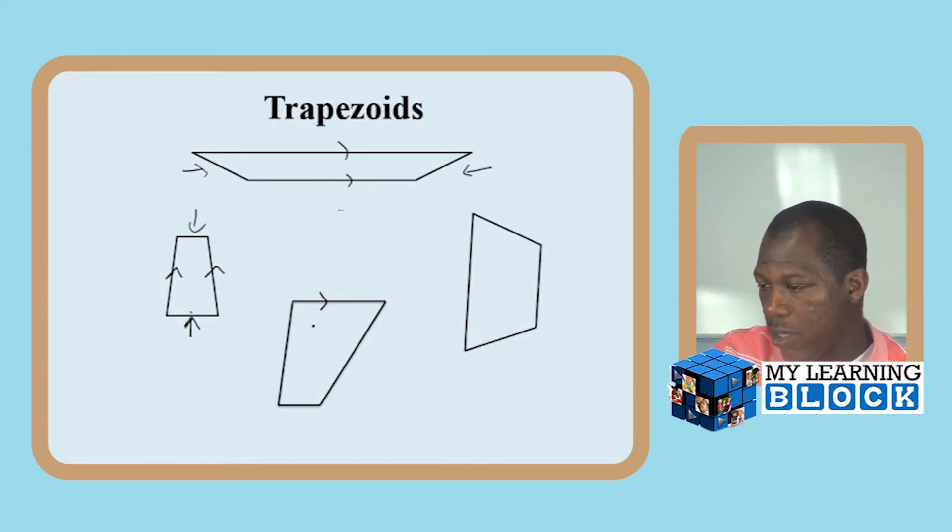This as well has one pair of parallel sides. These sides are not, it is still technically a trapezoid, a different type of trapezoid. Here we have it again. These sides are not. So all four of these are trapezoids. It has one pair of parallel sides and it is a quadrilateral.